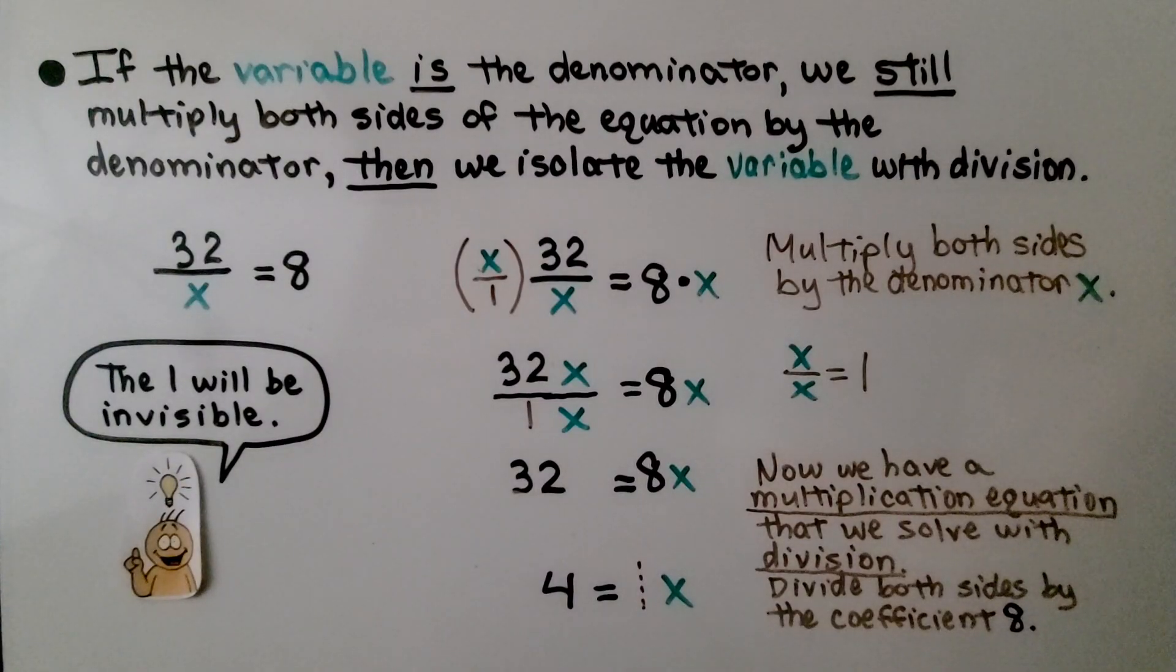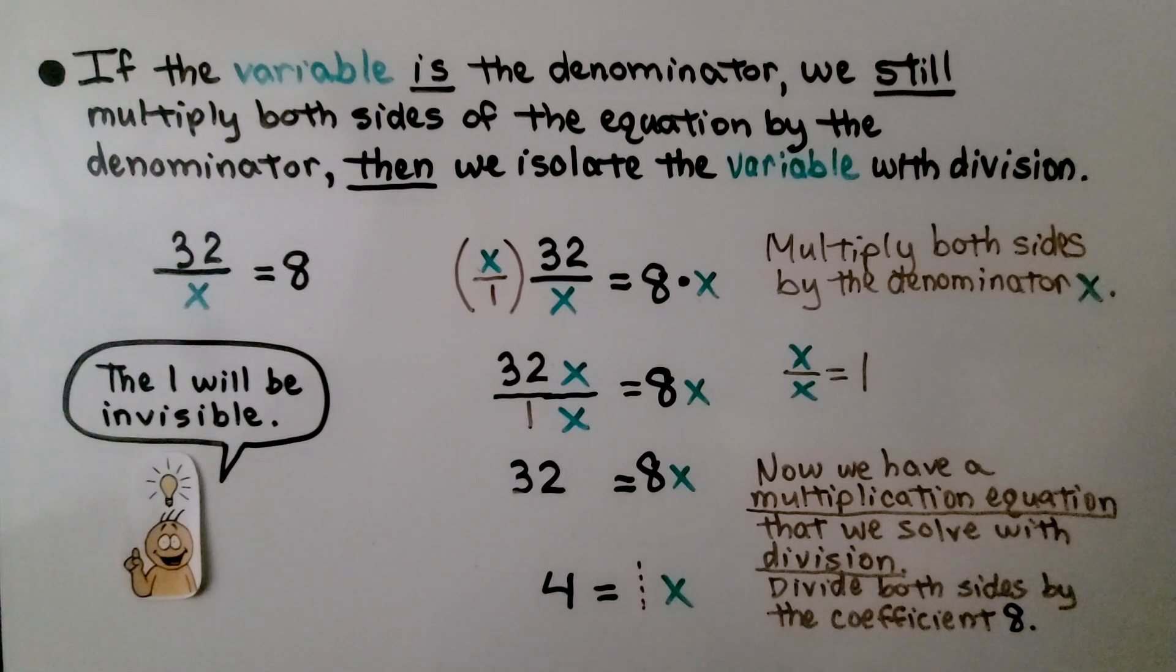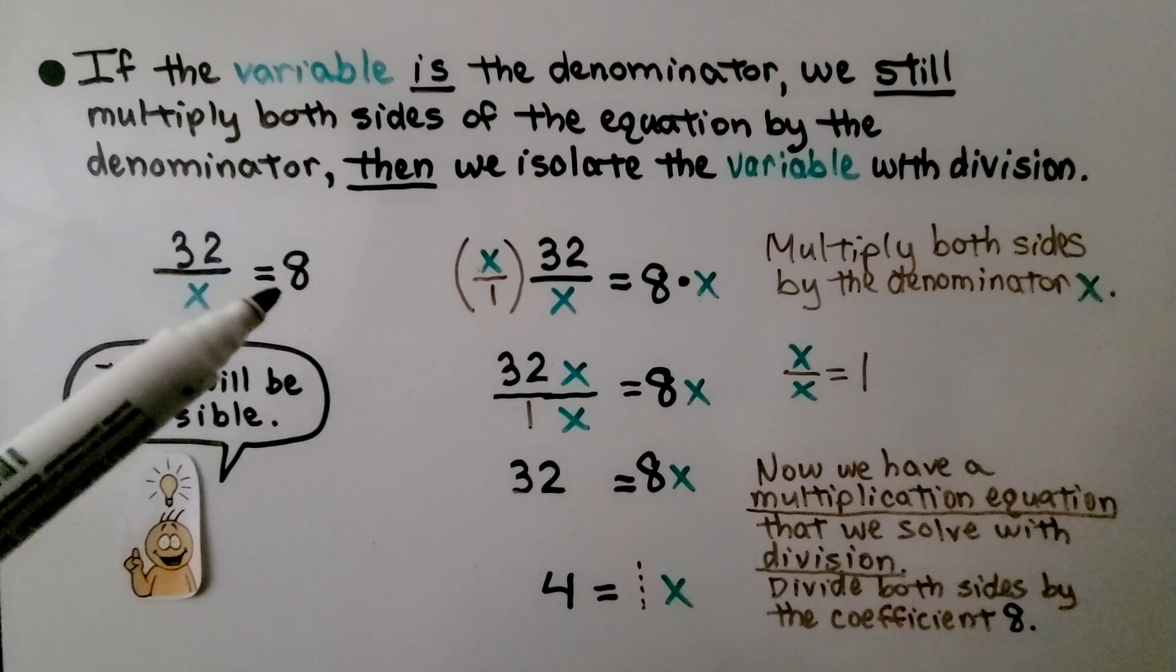So we saw how to isolate the variable when it was the numerator. If the variable is the denominator, we still multiply both sides of the equation by the denominator. Then we isolate the variable with division. We have 32 divided by x is equal to 8.